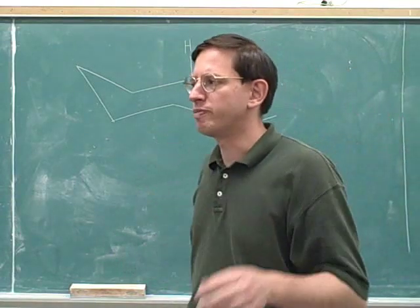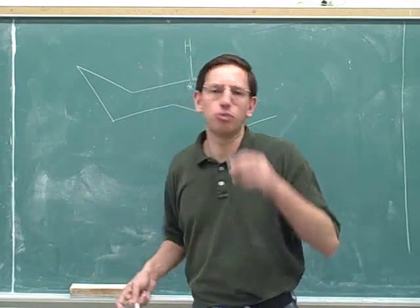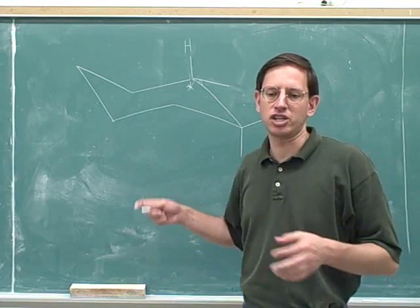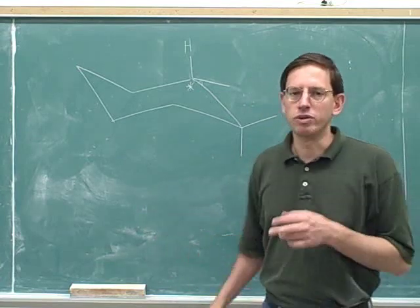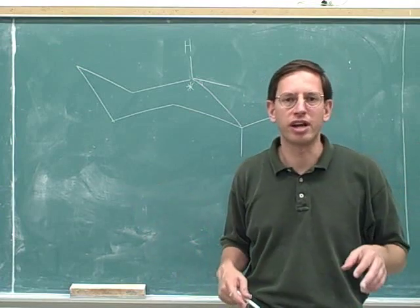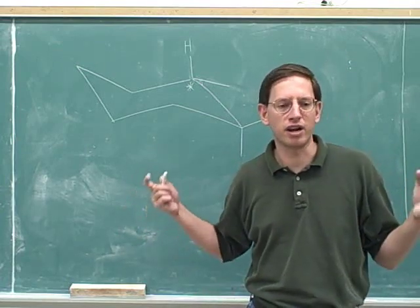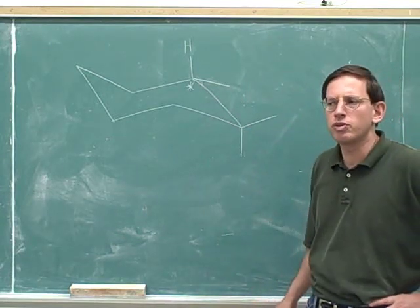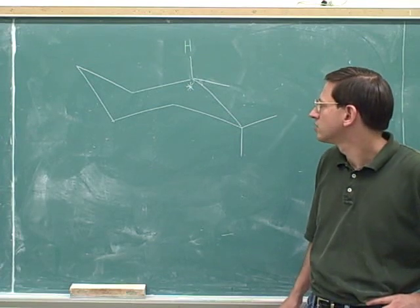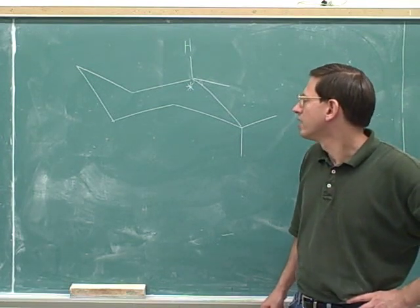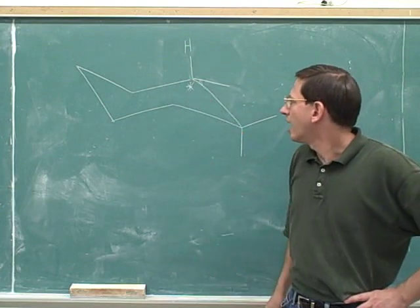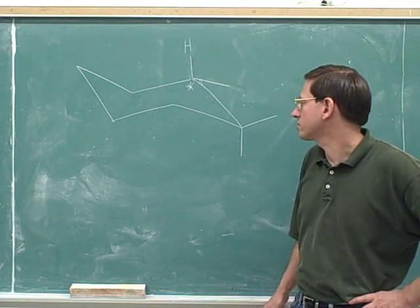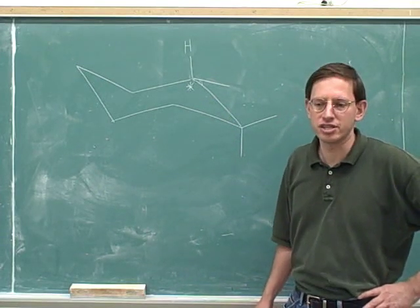The big problem we have here is that all along, we've been relying on dashes and wedges in the pictures to tell us whether things are pointing towards us or away from us. On a Fischer projection, even though there are no dashes and wedges, we know the horizontal lines are like wedges and the vertical lines are like dashes. But when we draw chair cyclohexane, we don't draw in dashes and wedges. So how can we figure out who's pointing towards us and who's pointing away from us if there are no dashes and no wedges?